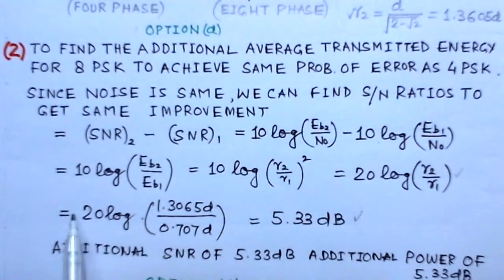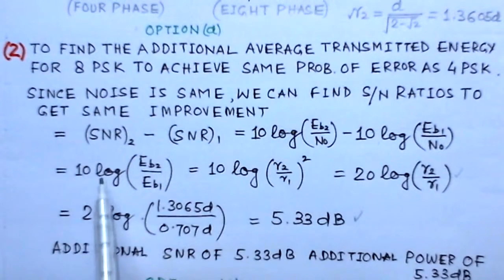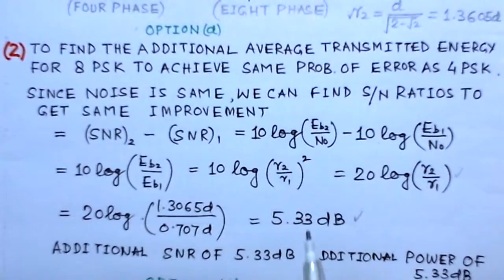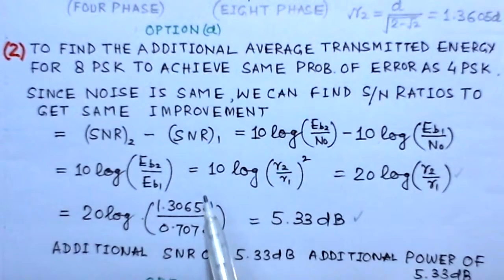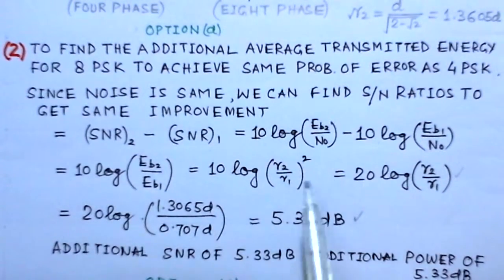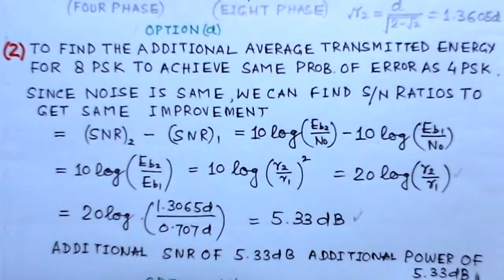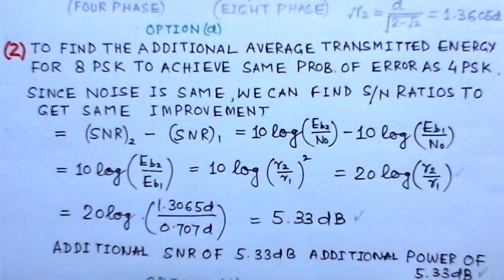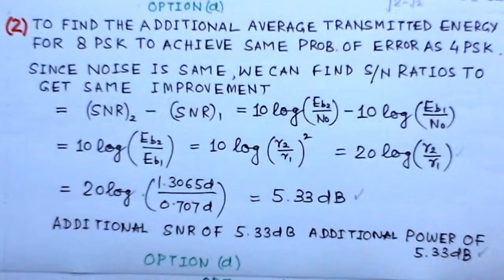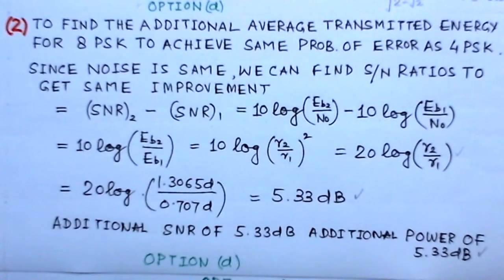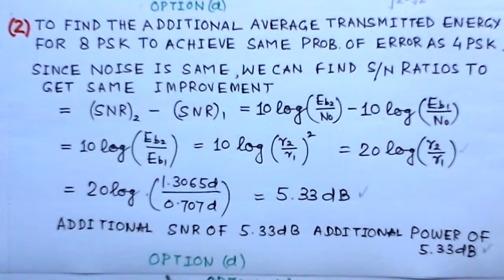This gives 5.33 dB. Basically this is the improvement - that is the signal to noise ratio of 8-PSK minus the signal to noise ratio of 4-PSK. The additional SNR for 8-PSK needed is 5.33 dB. This is the additional power which is needed for the 8-PSK system to have the same probability of error. So option d here is the right choice in this case.